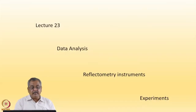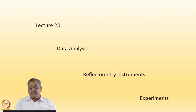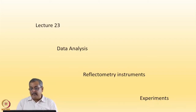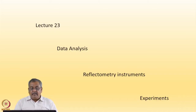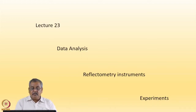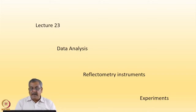We are on lecture 23 in the series. In these lectures, for the past two lectures I have been discussing neutron reflectometry, specifically polarized neutron reflectometry for thin film characterization. In this lecture, I will discuss the data analysis techniques for neutron reflectometry. I will familiarize you with reflectometry instruments, one which is there at Dhruva and a few more from the best sources to give a general idea about the kind of instruments that are available. Then I will deal with examples or studies that have been done using these instruments.